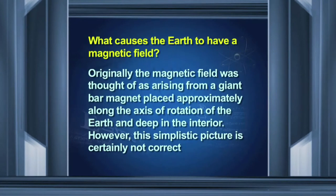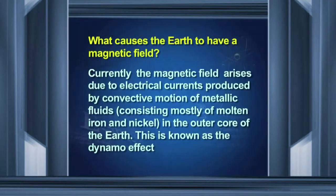What causes the Earth to have a magnetic field? For a long time it was thought there was a magnet inside it, but that original thinking is now redundant. Today, we think the magnetic field is due to the movement of molten fluid inside the Earth — the convective currents in fluids such as molten iron and molten nickel are said to be responsible for Earth's magnetic field.